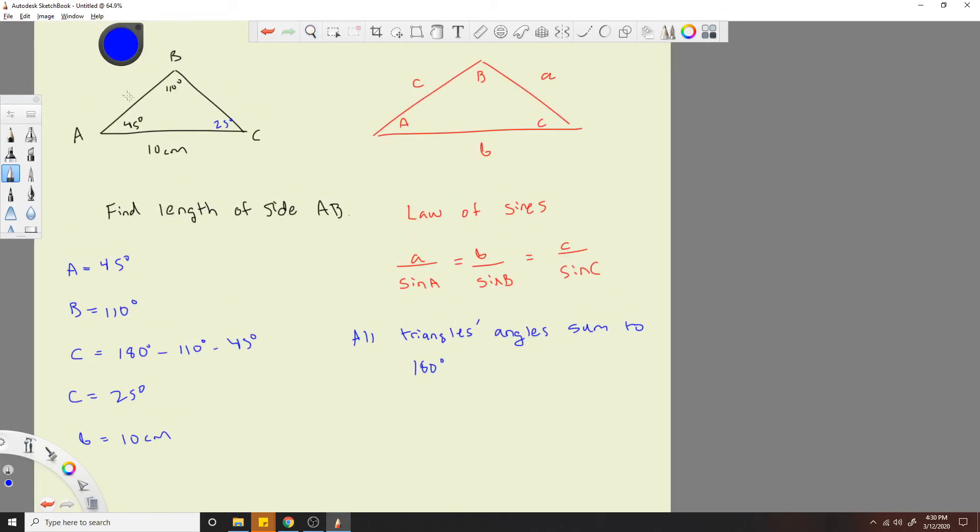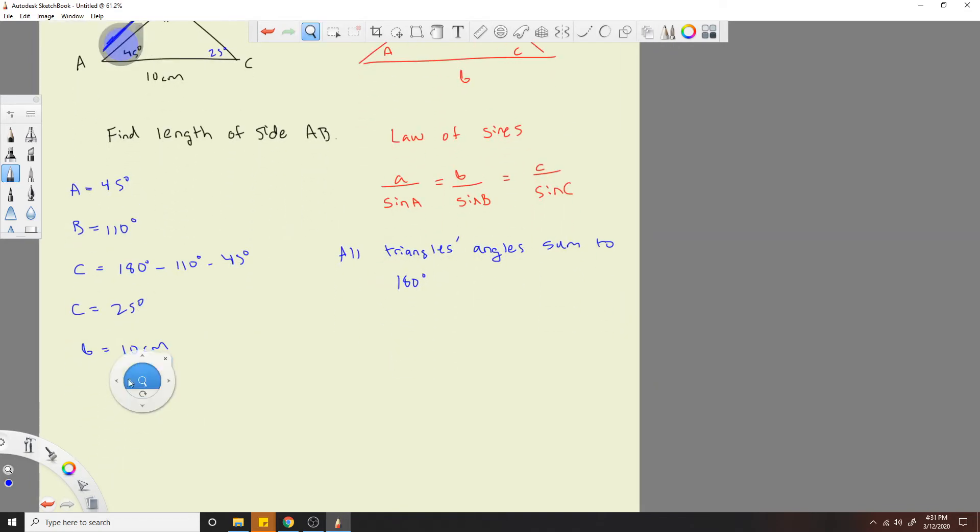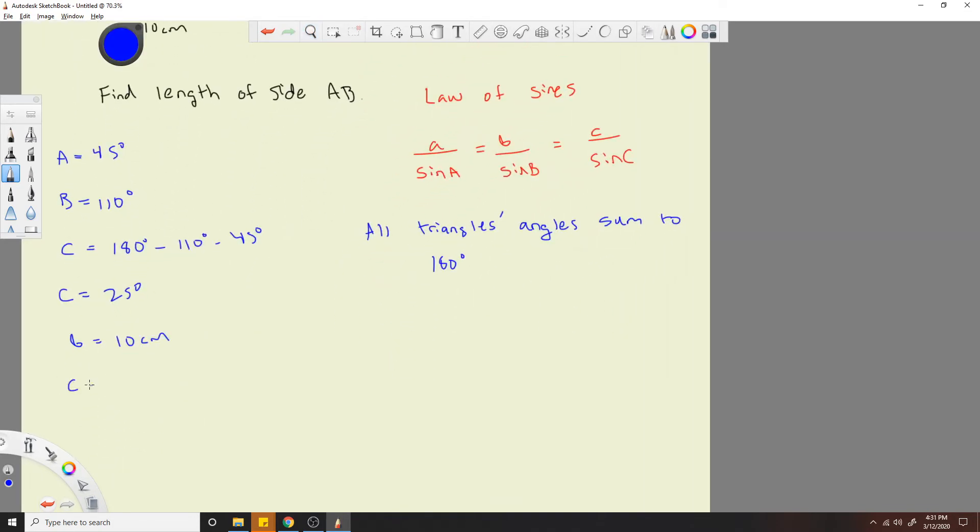We want to know what length AB is. So that's this length here, right? So what does that correspond to on this triangle? C. Good job.